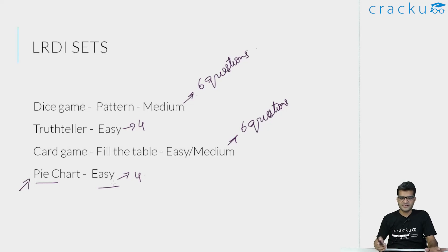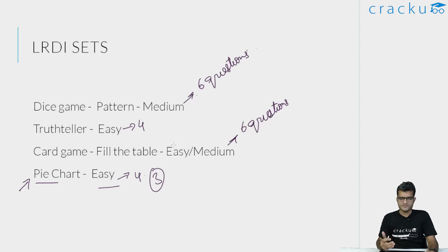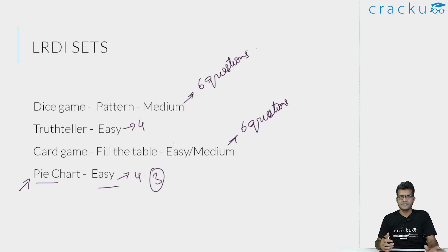Within the first three to four minutes I could get three out of the four questions correct. To get those three questions, I didn't have to solve the entire pie chart or put all the data into a table. What I try to do is first look at the questions and extract only the data that is needed, rather than putting the entire data in a table. Three out of four questions I could solve very easily by looking only at parts of the data. For the fourth question I had to use more of the data and it took some time. But still within the first seven to eight minutes I was able to get the pie chart question correct.